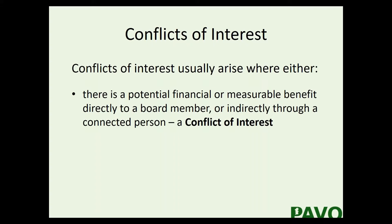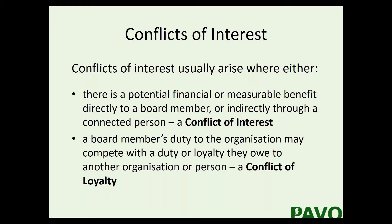Conflicts of interest usually arise where either there is a potential financial or a measurable benefit — something beyond the norm — that benefits a board member directly or indirectly through a connected person. That's the classic example of a conflict of interest.